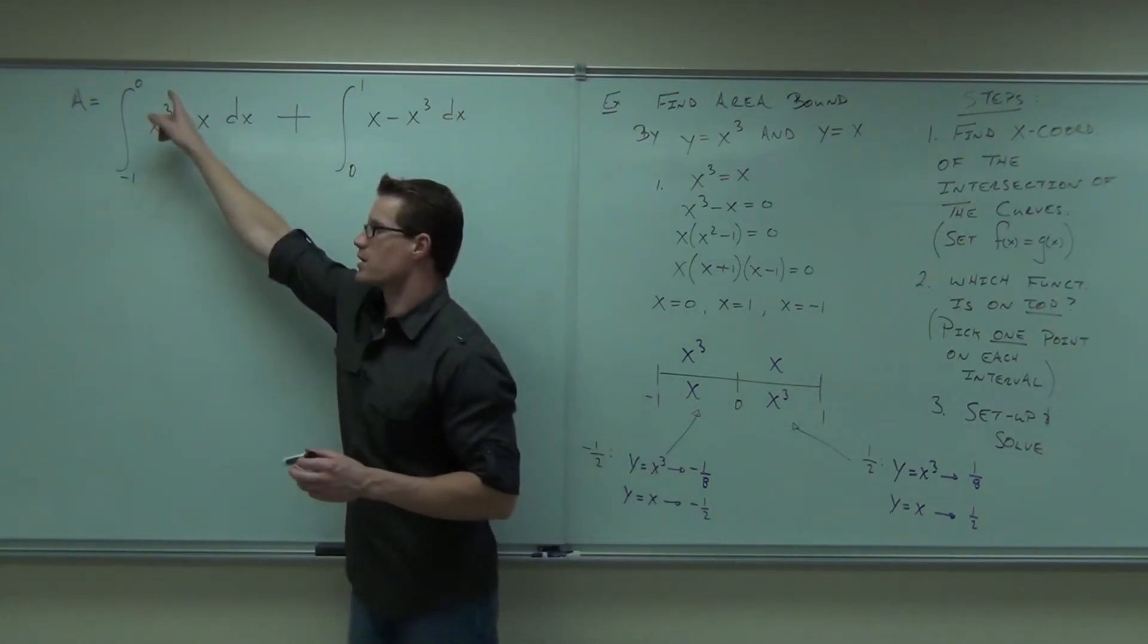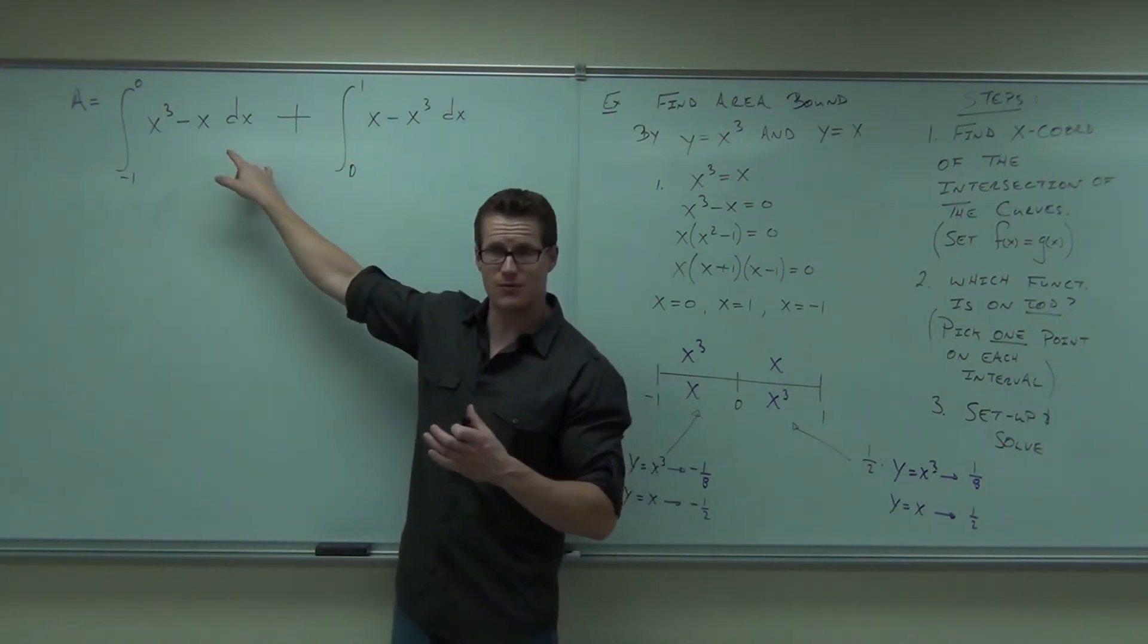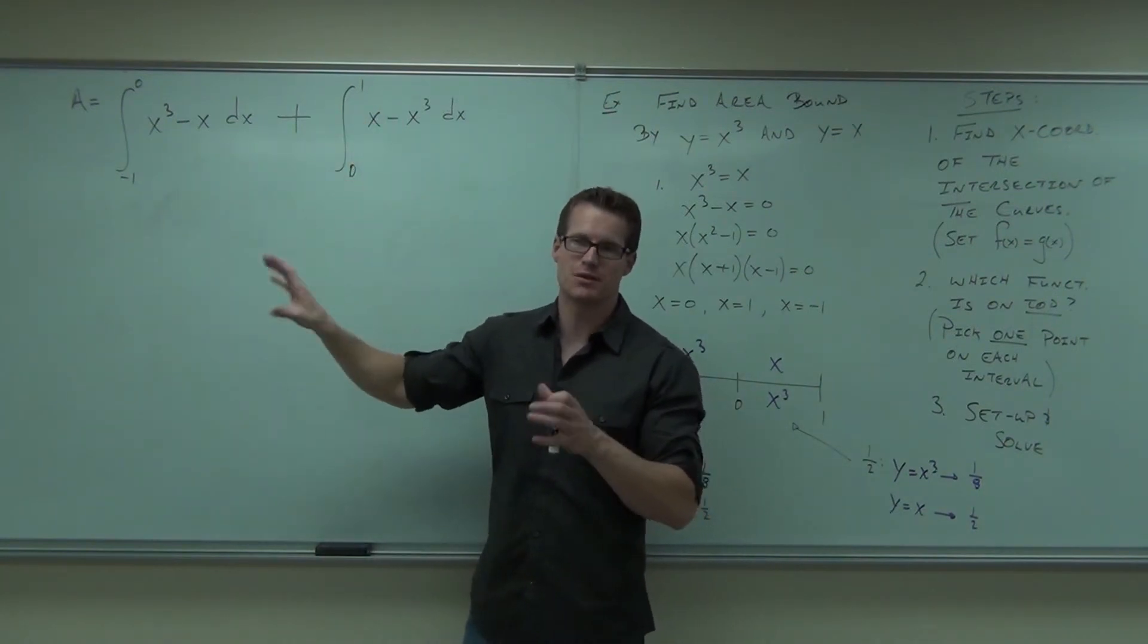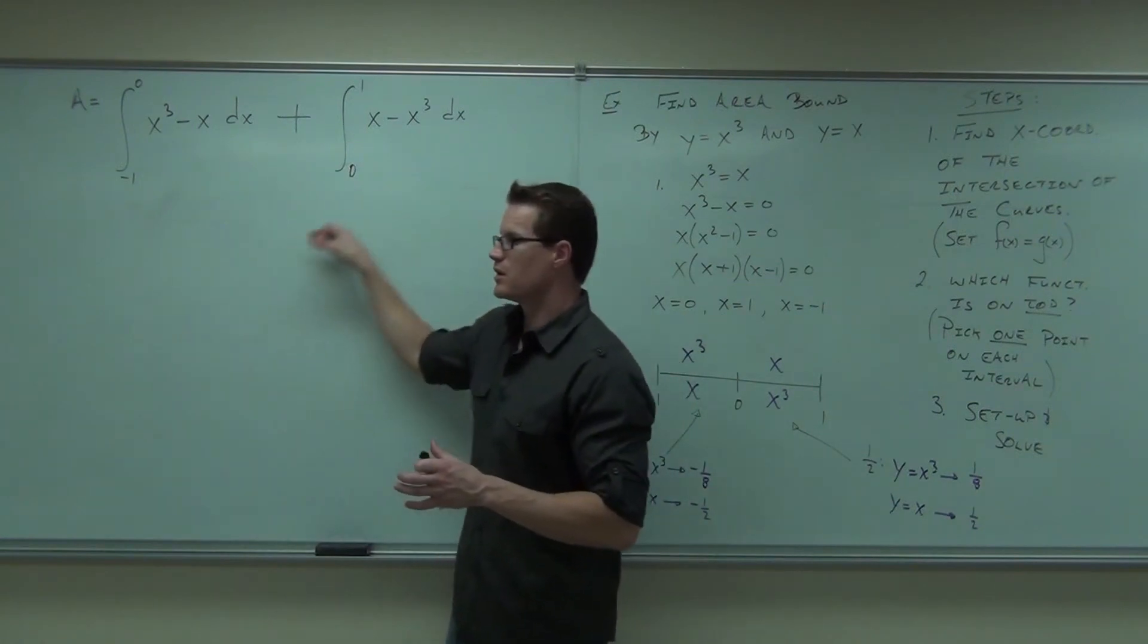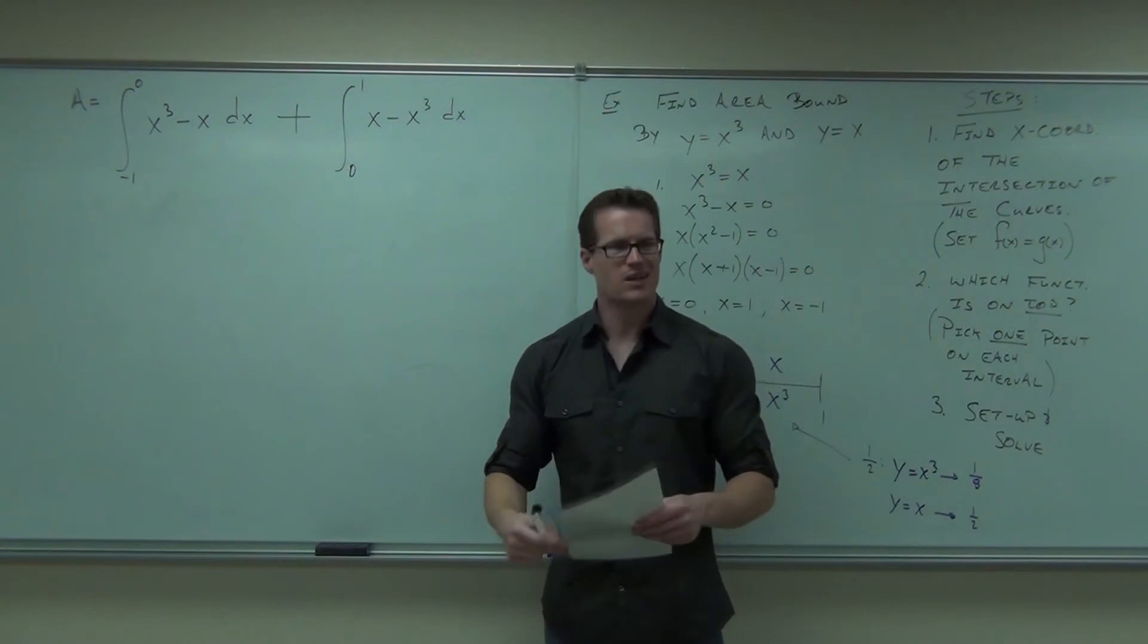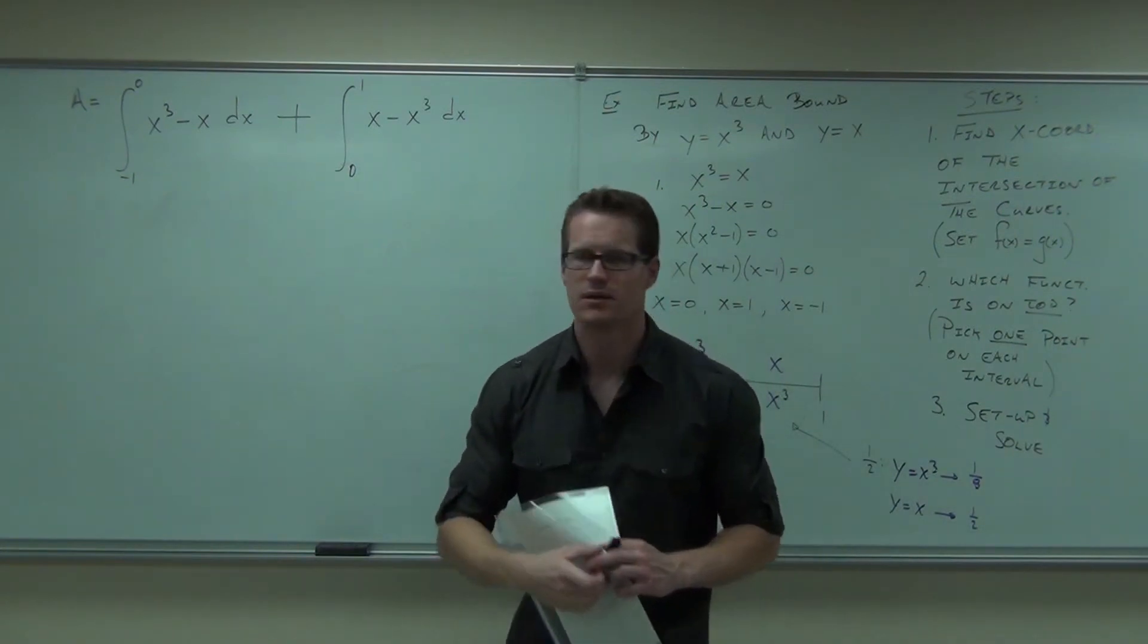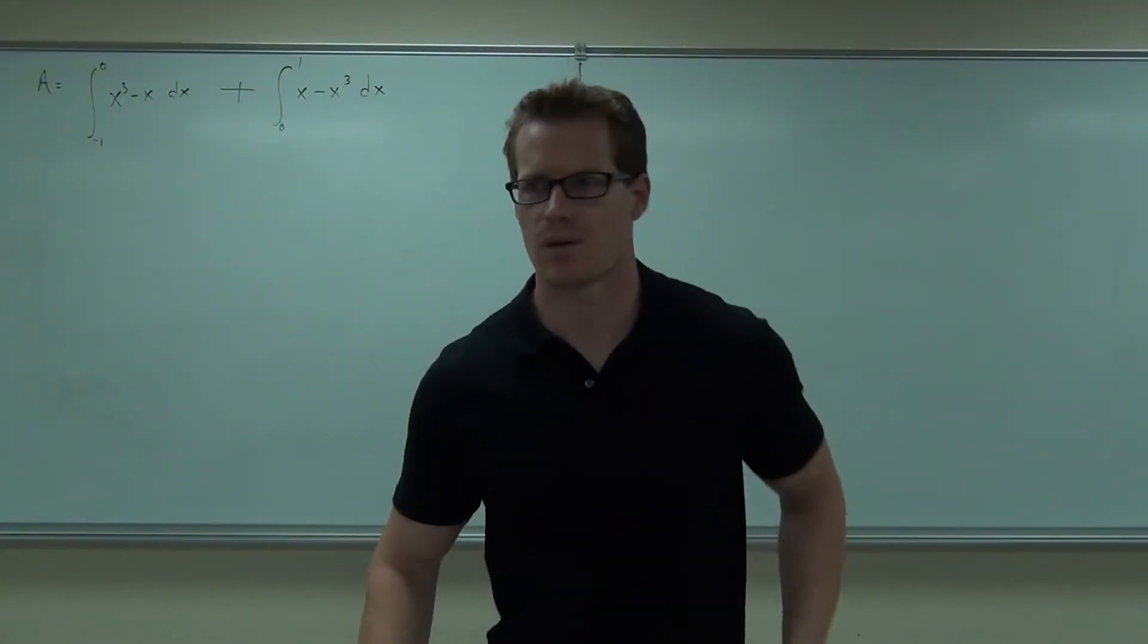Now, just because this goes from negative one to zero, and this one goes from zero to one, you can't combine them because they're not exactly the same function. So you have to do two different integrals. Do this one, do this one, figure out what it is. And then we'll start here. We'll probably start here next time. I'll just start with this integral. I'll give you the answer, and that will be our game.